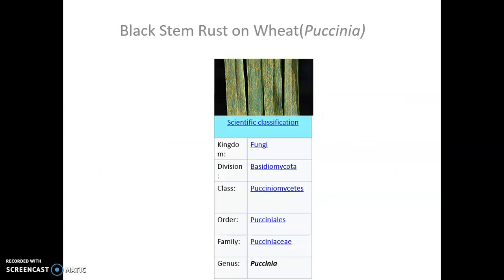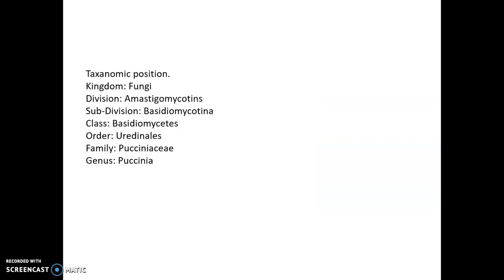So firstly, from the syllabus, the first genus is Paxinia. What is Paxinia? It is also a fungi. Paxinia is the causal organism of the disease black stem rust on wheat. So Paxinia causes the disease black stem rust on wheat. These are the scientific classification of Paxinia: Kingdom Fungi, Division Basidiomycetes, Class Paxinomycetes, Order Paxinials, Family Paxiniasi, and Genus Paxinia. You have to write up to genus.